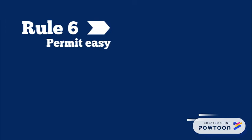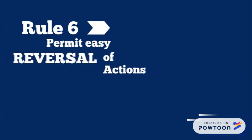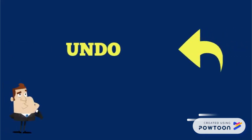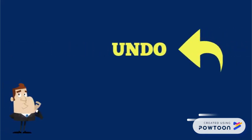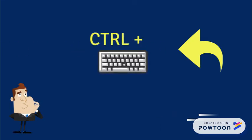Rule number six: permit easy reversal of actions. Designers should aim to offer users obvious ways to reverse their actions. These reversals should be permitted at various points, whether it occurs after a single action, a data entry, or a whole sequence of actions.